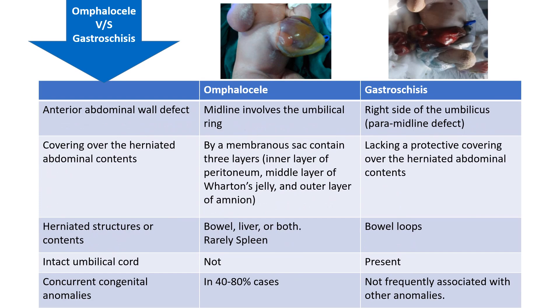Now in brief about omphalocele and gastroschisis: omphalocele is the midline defect — it involves the umbilical ring. While gastroschisis is a right-side or paramedline defect. When we look at the covering over the herniated abdominal contents, omphalocele is covered by a membranous sac which contains three layers: